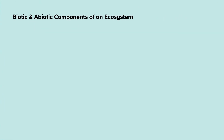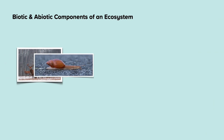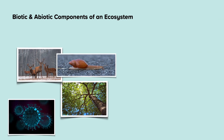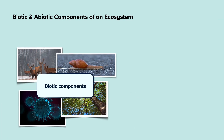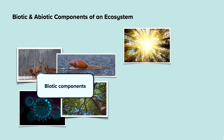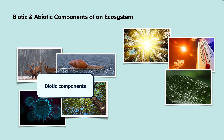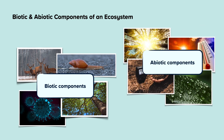The living components of an ecosystem, such as animals, insects, plants and bacteria, are referred to as biotic. Non-living components, for example climate, weather and soil type, are called abiotic.